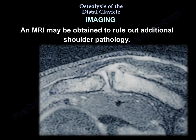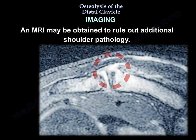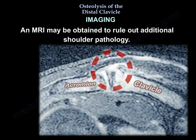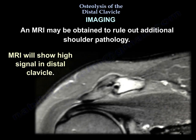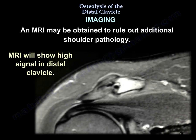MRI may be obtained to rule out additional shoulder pathology. The MRI will show high signal in the distal clavicle.